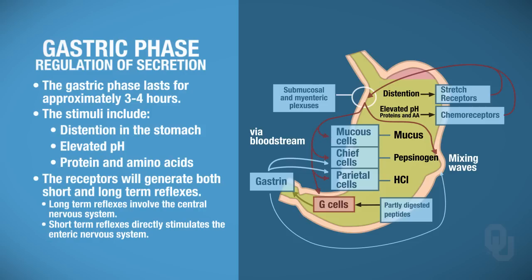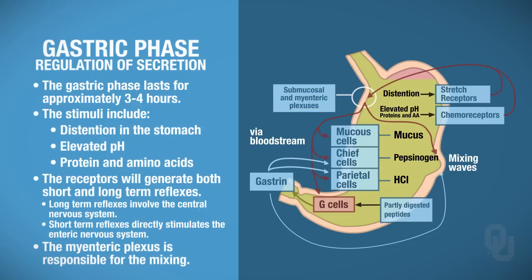We're going to send action potentials to the enteric nervous system — specifically to the submucosal plexus, which is in the submucosal gut wall, and also to the myenteric plexus, which is the nerve network that's part of the muscularis externa. The myenteric plexus is responsible for the mixing — the contraction of smooth muscle so that you can mix the chyme that's in the stomach. Remember, you don't call it food anymore when it's in the stomach; you call it chyme.